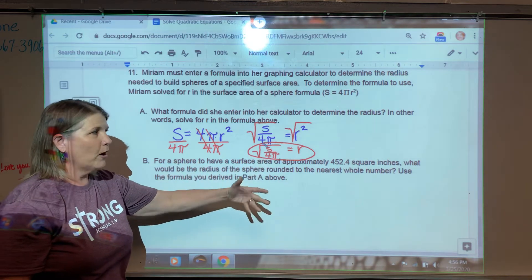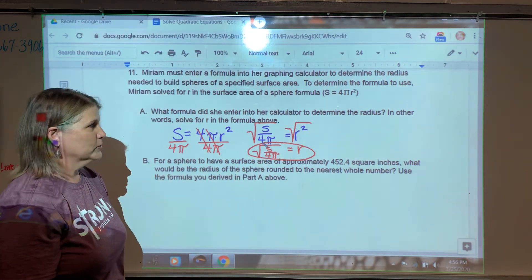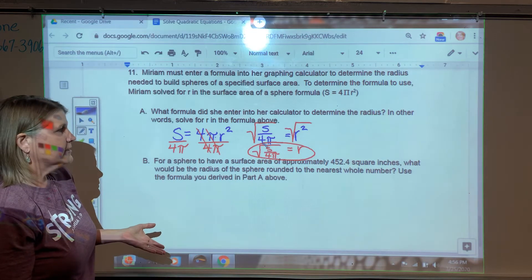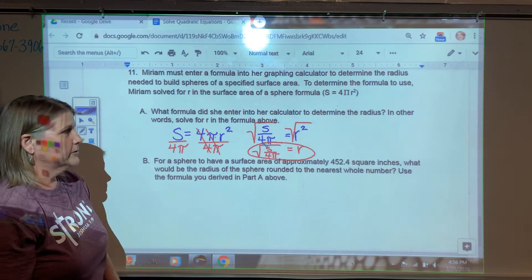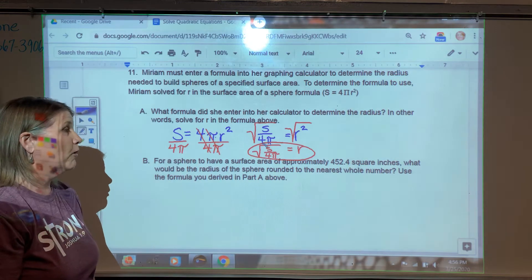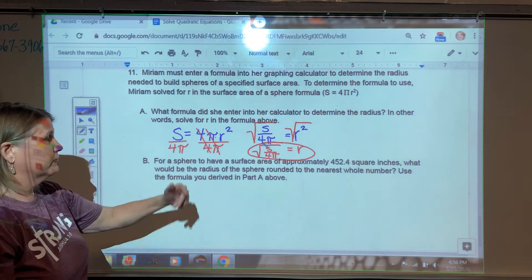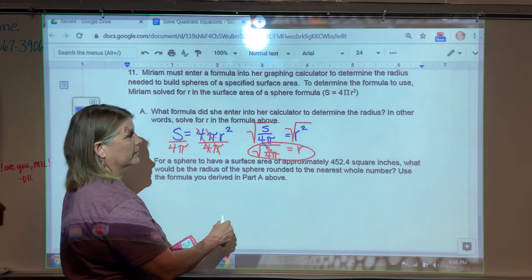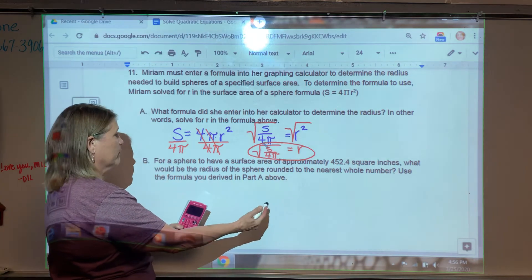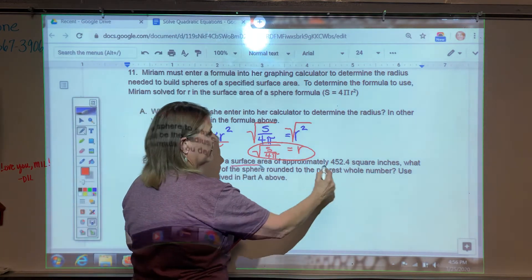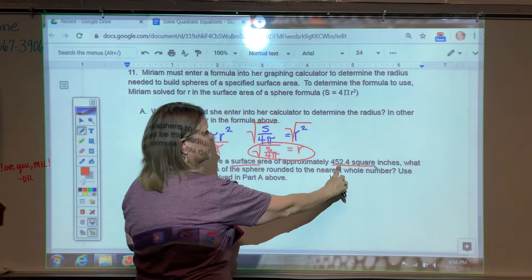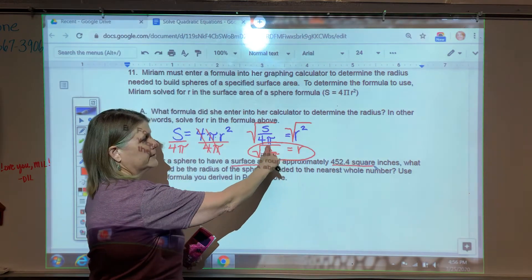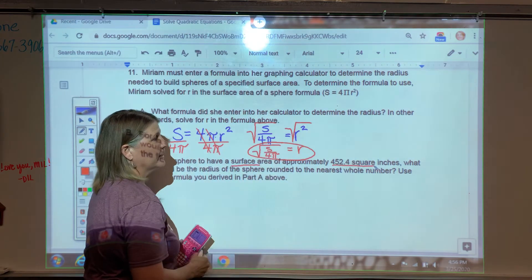It says, for a sphere to have a surface area of approximately 452.4 square inches, what would be the radius of the sphere, rounded to the hundredths, what would be the radius of the sphere rounded to the nearest whole number? And it says, use the formula derived in part A above. So basically, the only new information I have here is that the surface area is this. So this number will get replaced, or will be substituted in place of S.